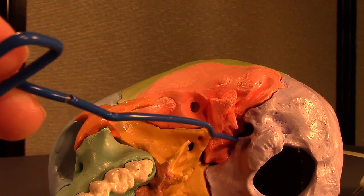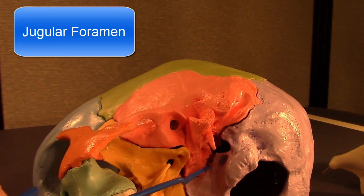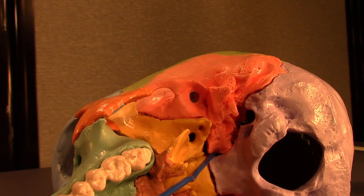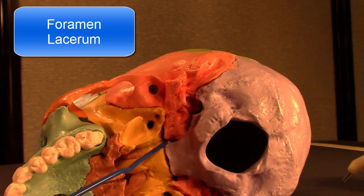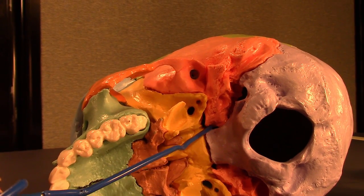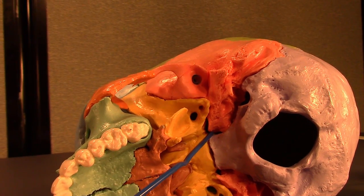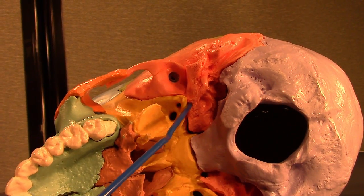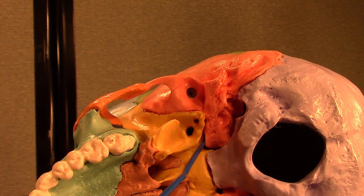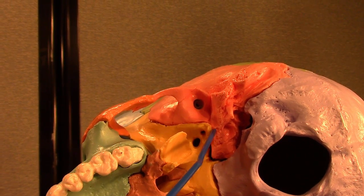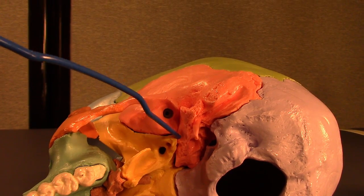Posteriorly, this synchondrosis ends right here — what was this called? It's the jugular foramen. And anteriorly, it ends right here in this hole — that's the foramen lacerum. And is that a true foramen in a living human? No — it has a plug of fibrous bone there. We have one more articulation here: the petrous portion articulating with the sphenoid bone, so this is called the sphenopetrosal synchondrosis. And that's where you get the width growth — the skull grows in width in this region.